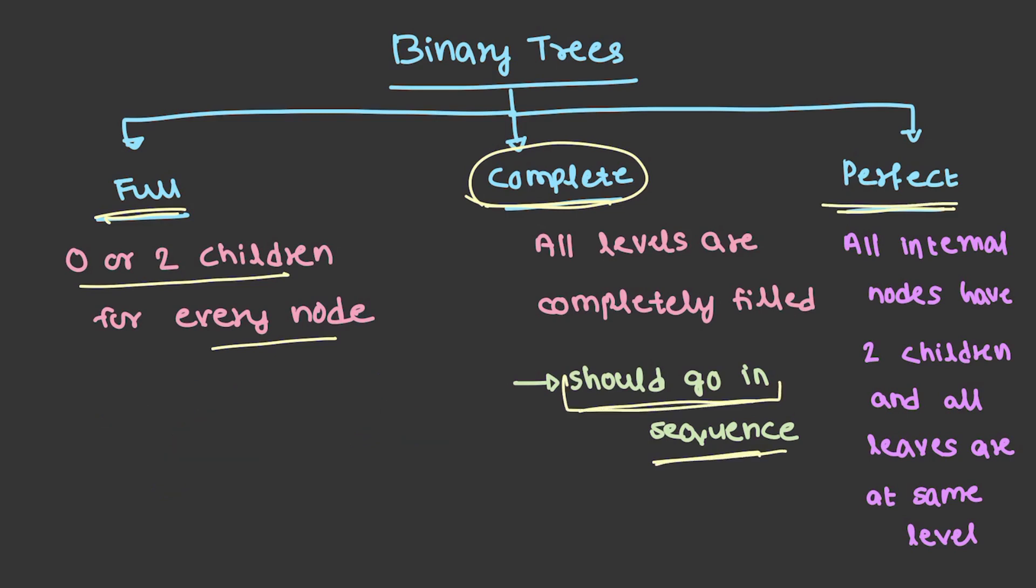Finally, we are having perfect binary tree where all internal nodes have 2 children and all leaves are at the same level. That means, if you consider a tree, this is the root, these are leaves. Both of these are internal nodes. This is having 2 children and this is having only 1 child. So, this is not a perfect tree.